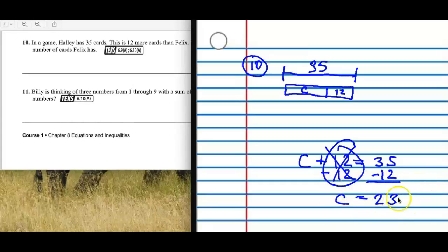Now, since we have 23 as our answer, let's go ahead and check that that's right. So instead of C, we're going to go ahead and write 23 plus 12. Okay. 3 plus 2 is 5. 2 plus 1 is 3. And that is what Hallie has. So that is correct.